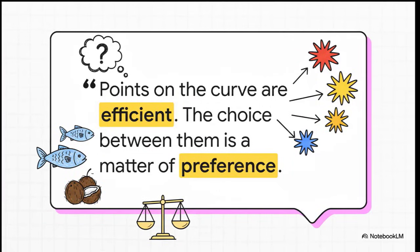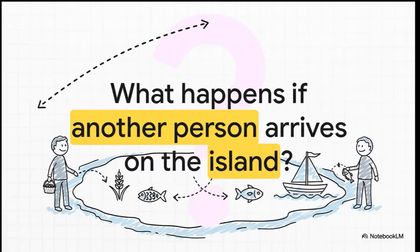But this brings up a great question. If every single point on that line is perfectly efficient, which one should he pick? Which one is the best? The truth is, the graph can't tell you. That's not a math problem — that's a preference problem. Economics can't tell Moshe if he's in the mood for fish or coconuts; it can just show him the most productive ways to get them. We've built this entire world around just one guy, but what happens when a second person washes up on shore? That opens up a whole new world of ideas, like specialization and trade, and it might just change everything.